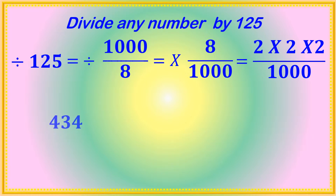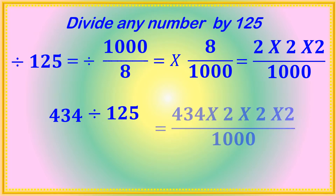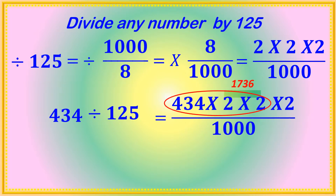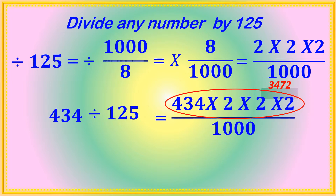Let's take one example: 434 divided by 125 equals 434 × (2 × 2 × 2) / 1000. If you multiply 434 by 2 — double it — you get 868. Again multiplying by 2 you get 1736. Once again multiply by 2 and you get 3472.